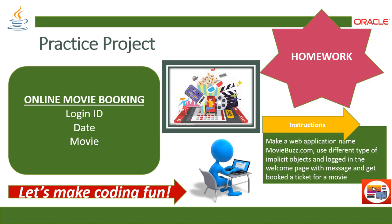Now it's homework time. Today's web application project is named 'Online Movie Booking' — moviebuzz.com. The requirements are: use different types of implicit objects to log in a welcome page with a message and book a ticket for a movie. Maintain the session using the session implicit object, display the message on the next page, get the movie name from web.xml using the context implicit object, and print the current date or date of booking using the `out` implicit object.